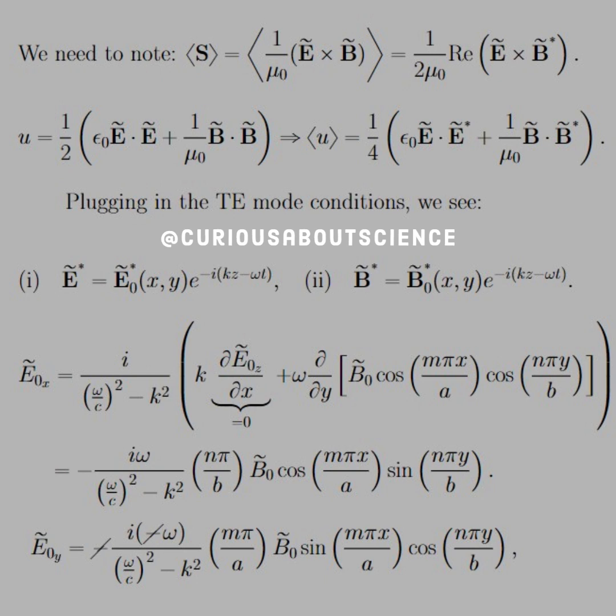Alright, so plugging in the TE mode conditions, we see that E star is equal to E naught star XY e to the negative i(kz minus omega t). Similarly, with the B naught or B with the negative i.